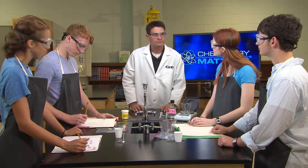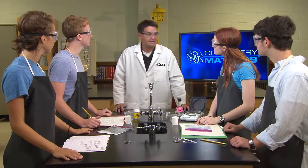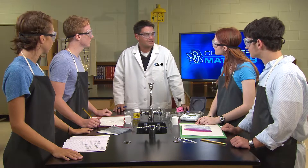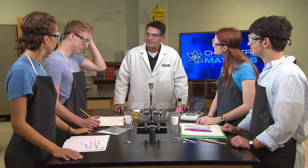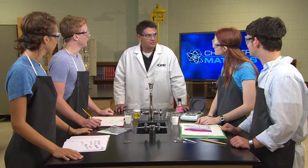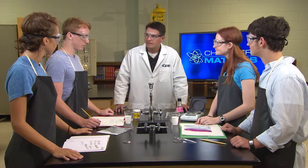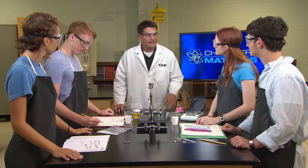Now that you've measured the masses of the acetic acid and the sodium bicarbonate, write down your reactant mass totals in a chart and take a picture so we can discuss the results later. After you've done that, go ahead and finish your lab. Remember to be careful to remove the air from the bag and seal it well before allowing the reactants to touch each other.